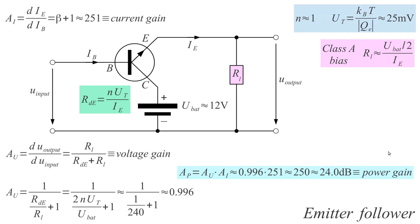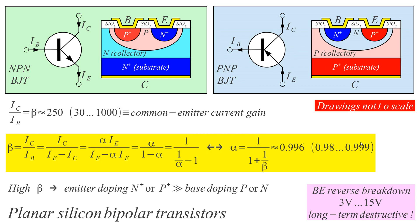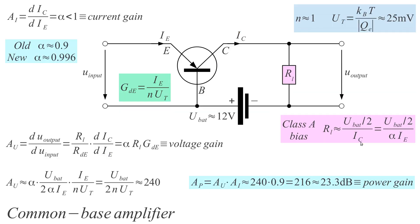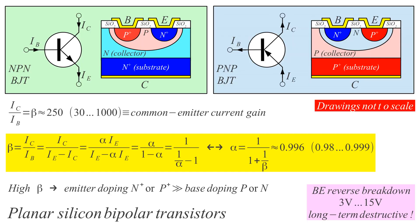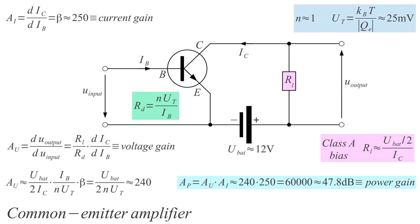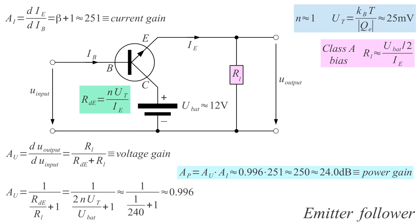So to summarize, we can make an amplifier with a common base circuit, a common emitter circuit, or a common collector circuit. All three configurations are available.